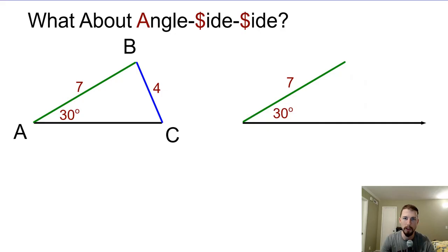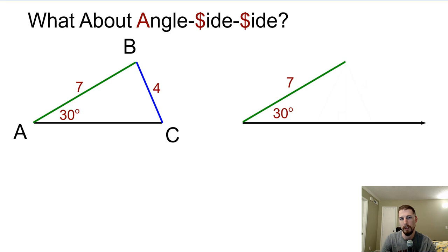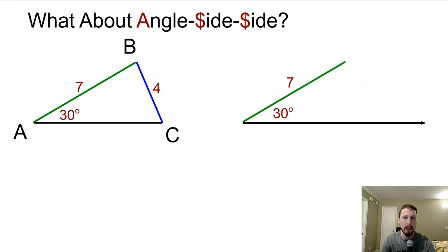Hey guys, welcome back. We're going to learn our last new congruency postulate. So we've already talked about side-side-side and side-angle-side, where the angle is included in between the sides. Then angle-angle — that one doesn't work, it just merely tells us they're similar to each other, meaning they have the same shape.